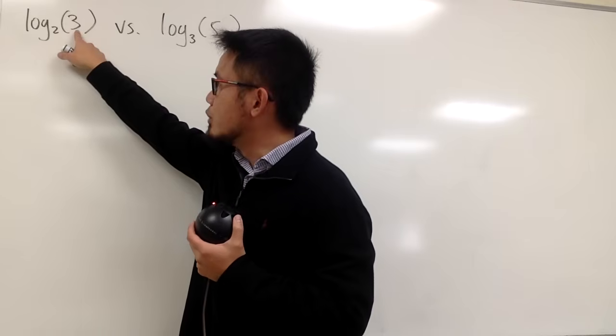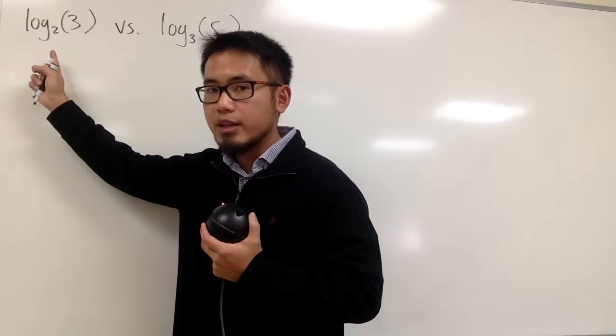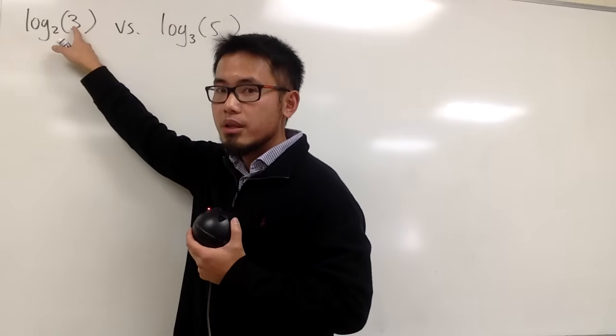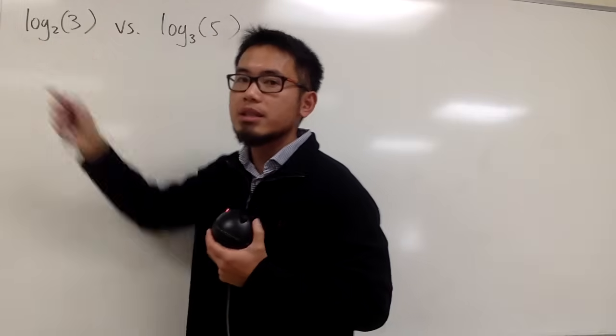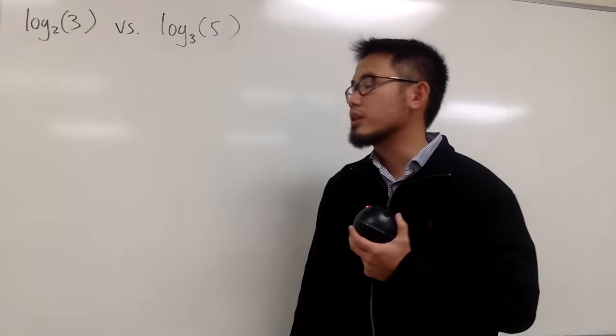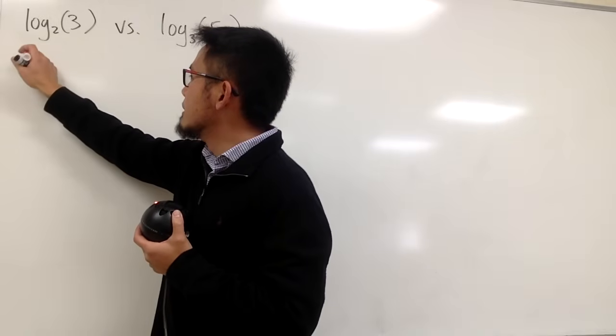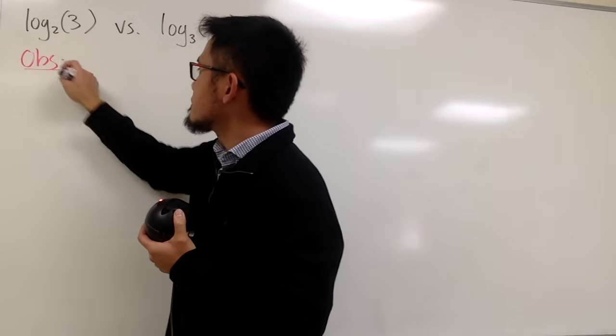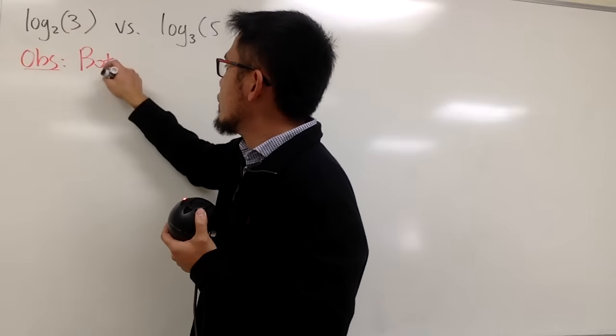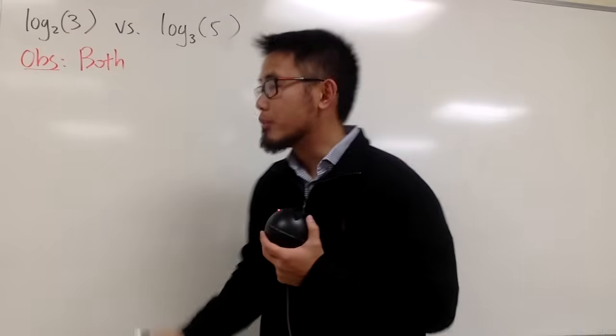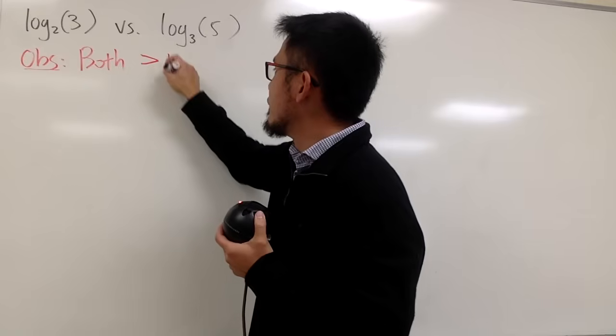Because if the input was exactly 2, then log base 2 of 2, that's exactly 1. But since the input right here is 3, then this is bigger than 1, since log is an increasing function. Likewise, this is also bigger than 1 for the similar reason. So let me just make some observation right here. I will just write this down. Now, we know that both of these numbers are greater than 1.